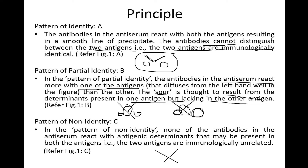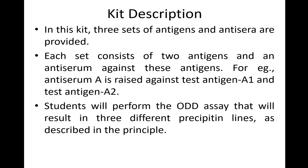The third pattern is the crisscross line. In this case, the two antigens are absolutely different from each other, and the antiserum cannot recognize either of the two. This leads to formation of a complete crisscross line, indicating non-identity between the two antigens.